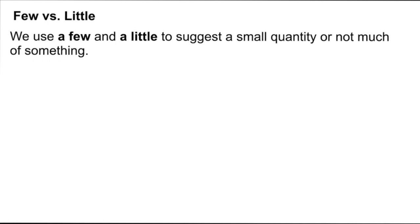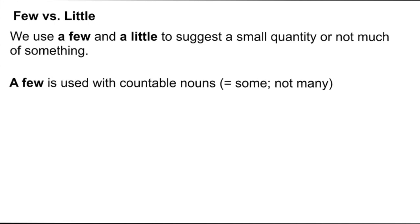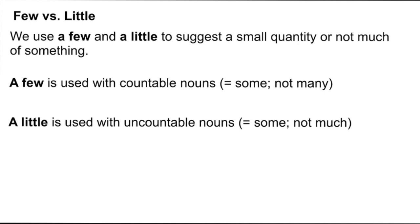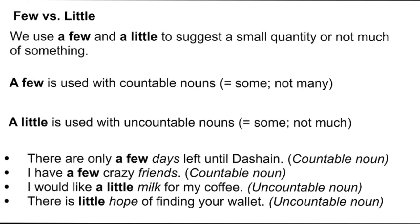'A few' and 'a little' suggest a small quantity — not a lot. 'A few' is used with countable nouns and means some but not many — for example, 'There are only a few days left' or 'I have a few crazy friends.' 'A little' is used with uncountable nouns and means some but not much — for example, 'I would like a little milk for my coffee' or 'There is a little hope for finding your wallet.'